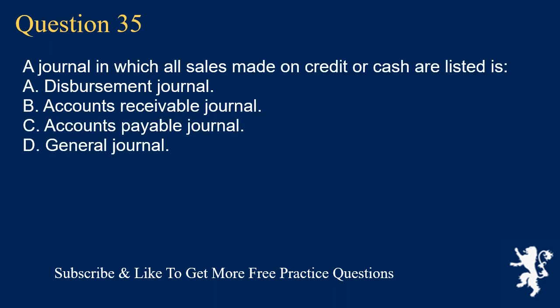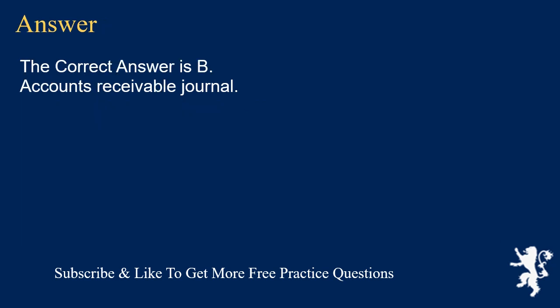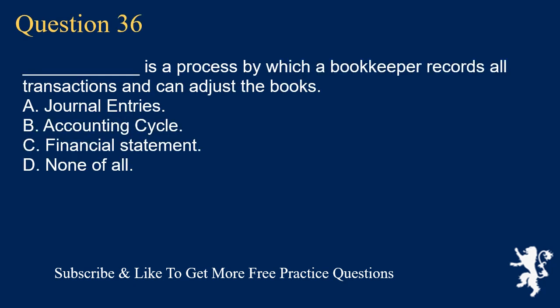Question 35: A journal in which all sales made on credit or cash are listed is: A. Disbursement journal. B. Accounts receivable journal. C. Accounts payable journal. D. General journal. The correct answer is B. Accounts receivable journal.